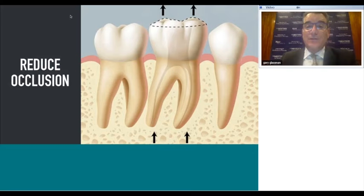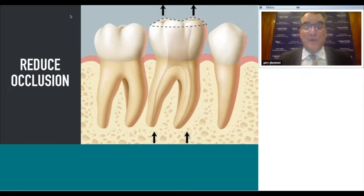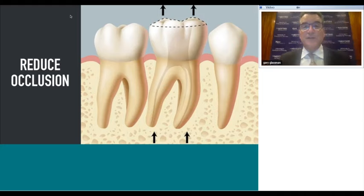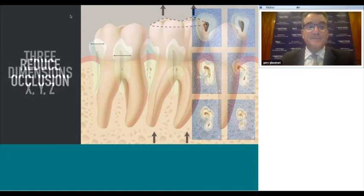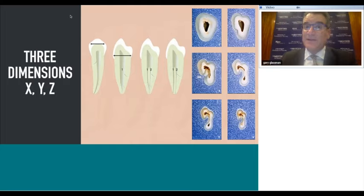Reduce the occlusion for a couple of reasons. If the patient is a bruxer, after root canal treatment there will be some periapical inflammation, so keeping those teeth out of contact reduces discomfort. Reducing the occlusion also provides more stable reference points rather than an off-angle occlusal plane, especially if the tooth is being prepared for a crown later. We have a two-dimensional image of a three-dimensional object, so take off-angle x-rays.